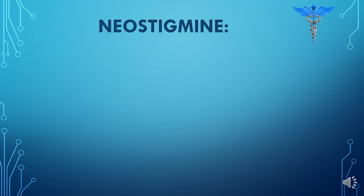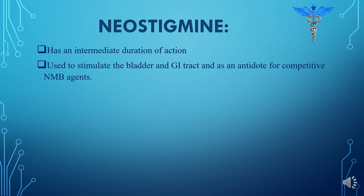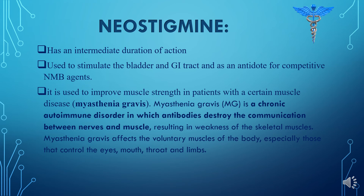The reversible anticholinesterase agent neostigmine has an intermediate duration of action and is used to stimulate the bladder and GI tract. It is used as an antidote for competitive neuromuscular blockers. Neostigmine is also used to improve muscle strength in patients with myasthenia gravis — the chronic autoimmune disorder in which antibodies destroy the communication between nerves and muscles.